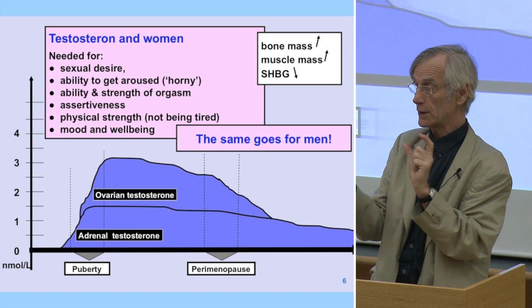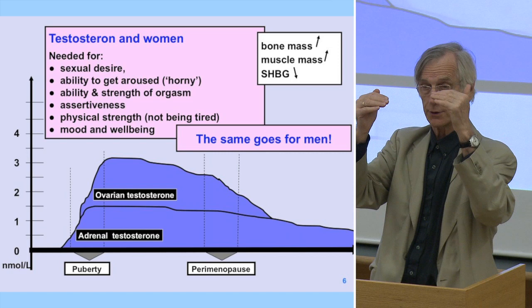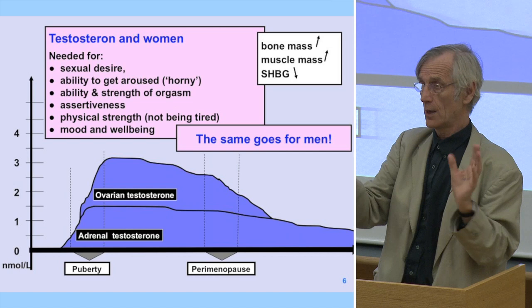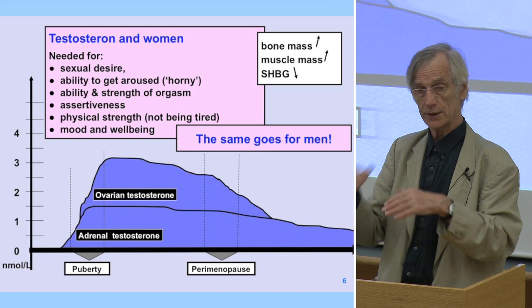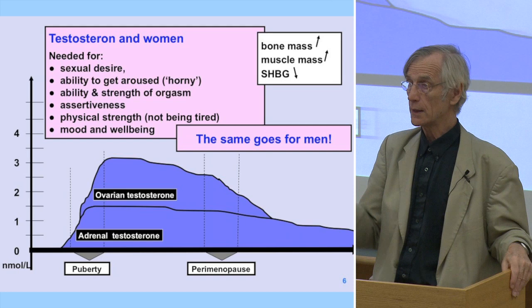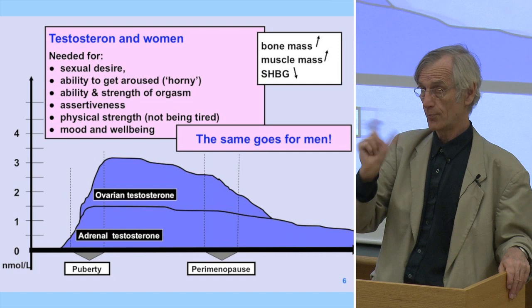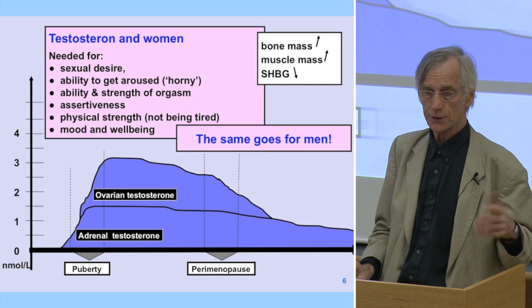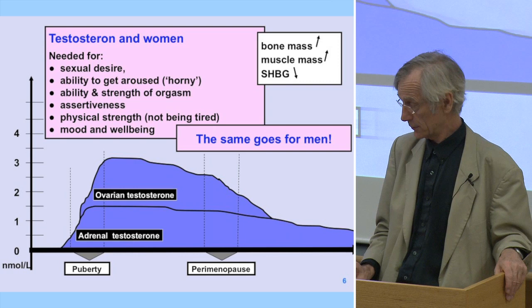We also need testosterone for mood and well-being. You can see the difference in depression rates: in my country, between ages 18 and 65, men have about an 11% risk for depression and women have about 20% — nearly double. You can see this connection in that some depressions can actually be treated with testosterone, so it is very important for mood as well.